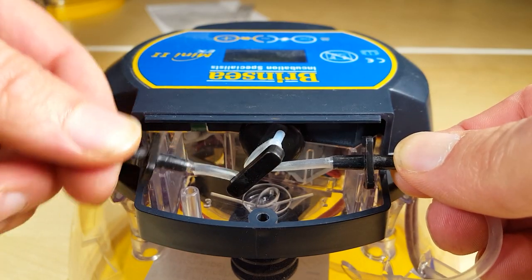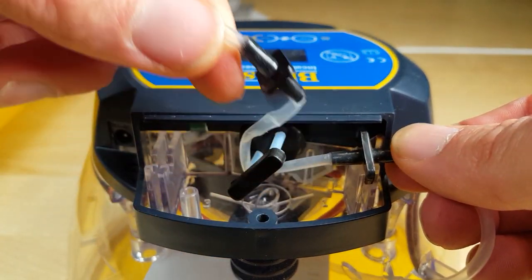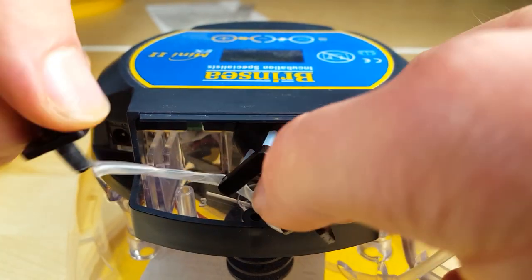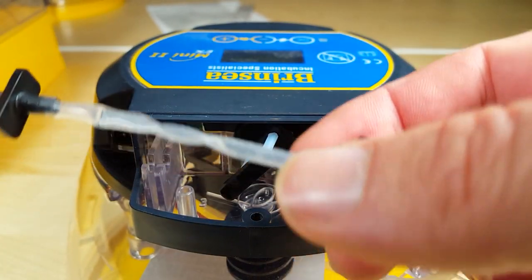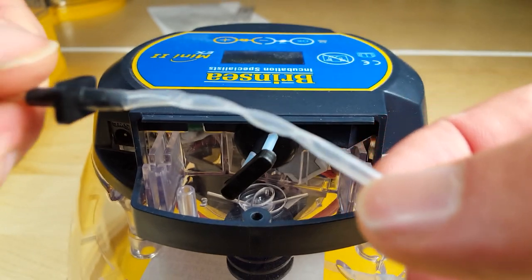Check the condition of the tubes after each hatch and if not in use unwrap the pump tubing from the capstan.